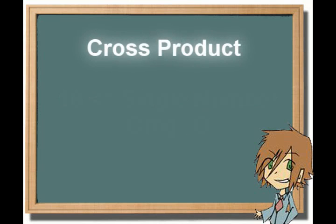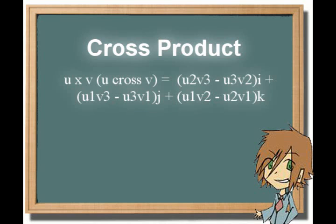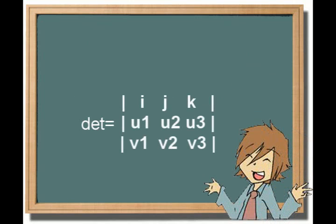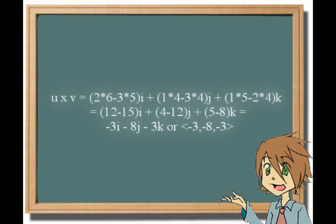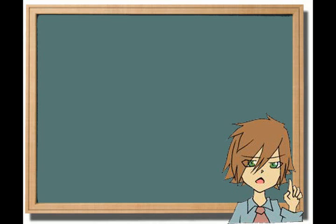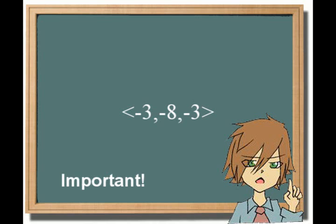The next thing we have to go over is how to find the cross product. The cross product is written in this form. Basically, to find the standard form coefficients, you take the determinants of the 2 by 2 matrices that you can get from this 3 by 3 matrix. Let's use these vectors to illustrate. And this is what you get when you take the cross product. The final answer ends up being negative 3i minus 8j minus 3k, or negative 3, negative 8, negative 3. As you have no doubt noticed, the cross product is a vector. This is also important, as it helps us with our next concept.